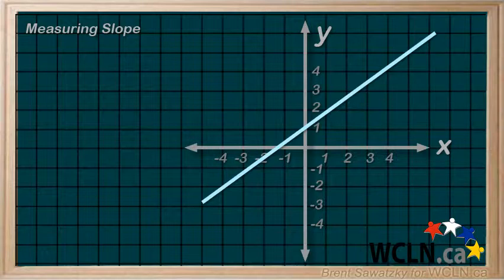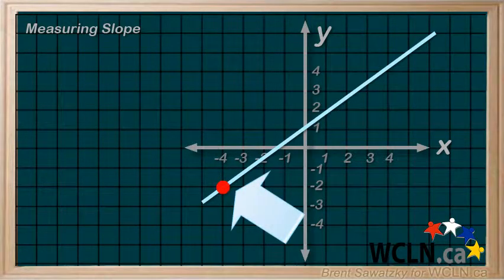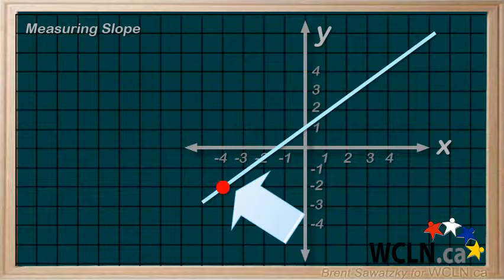Well first, identify two points on the line that are easy to read. That is, they should cross through intersections on the grid, if at all possible. Just something that we can read fairly easily off the graph. Here's a good example point, right on the intersection of grid lines.